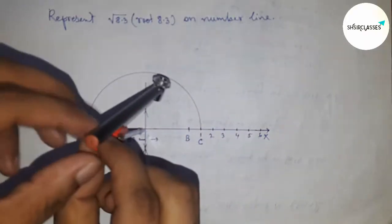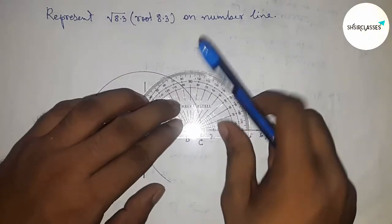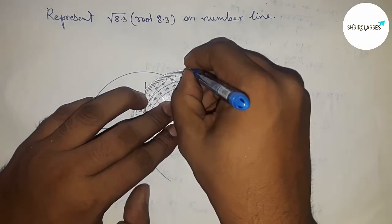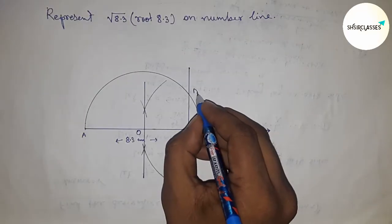This is the semicircle. Next, construct a 90 degree angle using a protractor.